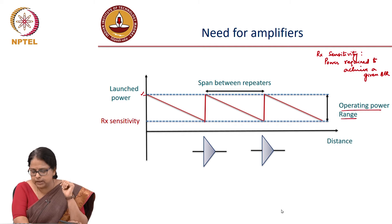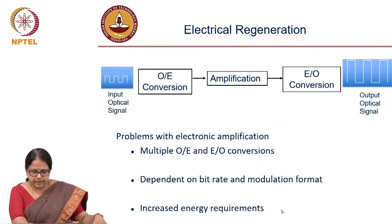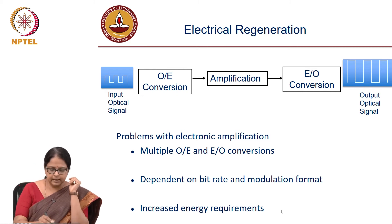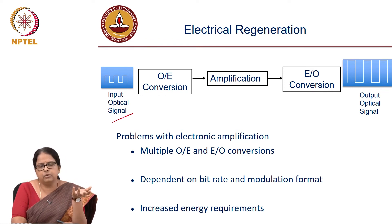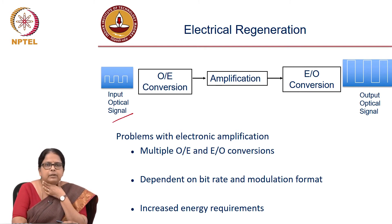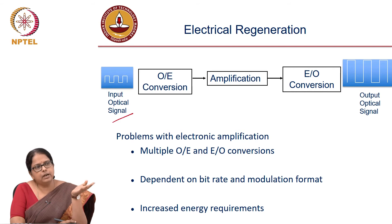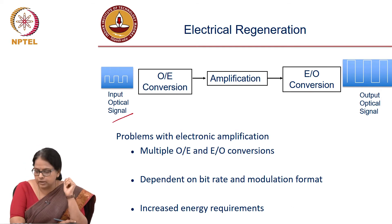How do you want to do this amplification? Should you use an electronic amplifier? In earlier times, before optical amplifiers were first made, people thought of using an electronic amplifier — the process of electrical regeneration. The input optical signal undergoes optical-to-electrical conversion, essentially demodulating the signal, then you amplify in the electronic domain using a transistor, op-amp, or MOSFET amplifier. Then you convert back from electrical to optical domain, remodulating your data. This is called regeneration — electronic regeneration — and you get your optical signal back.